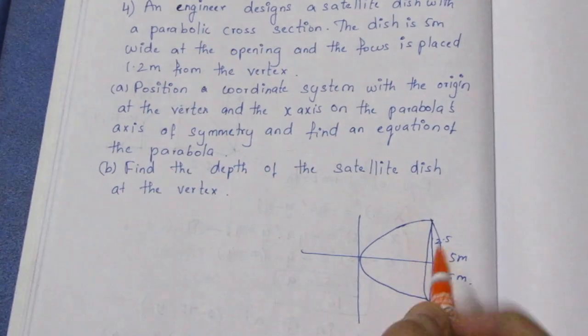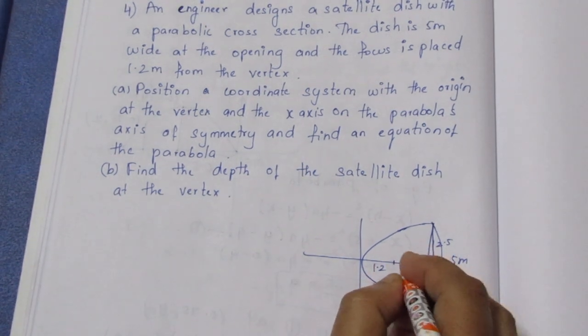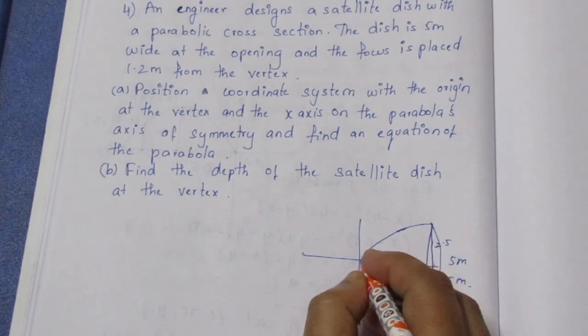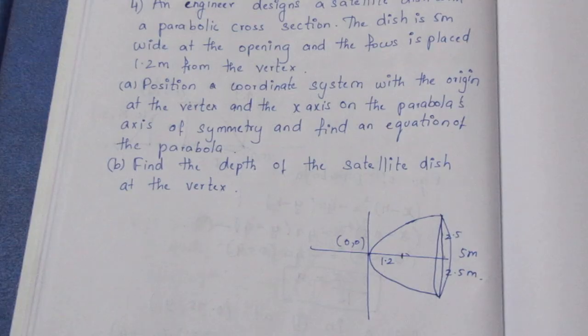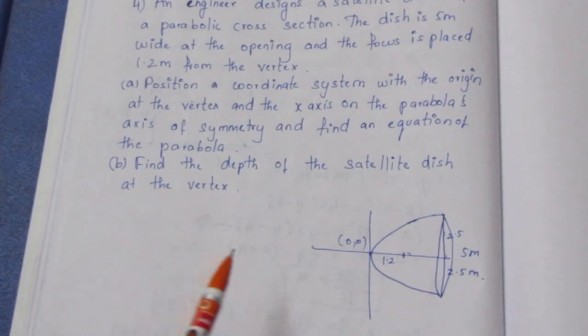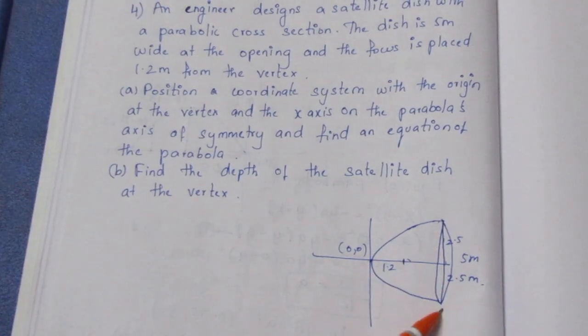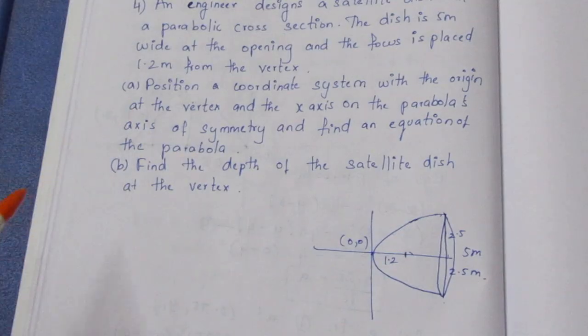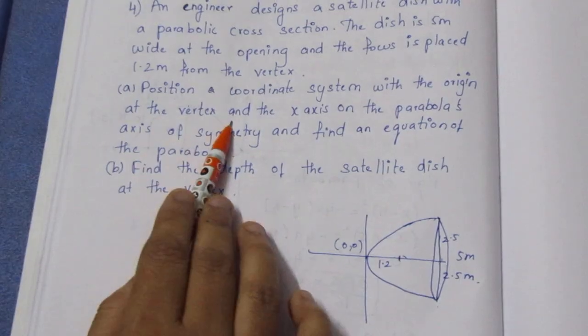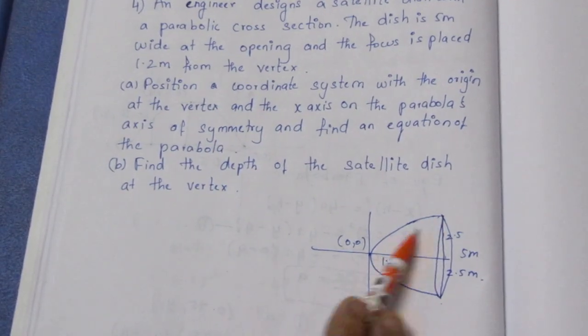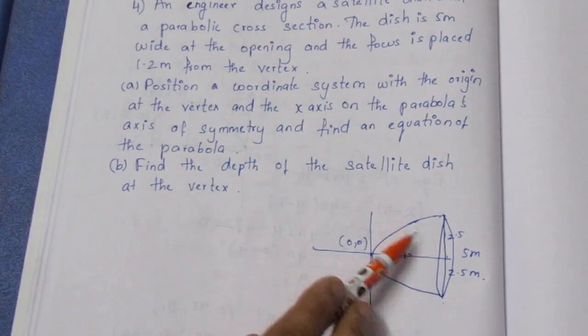The focus is placed 1.2 meter from the vertex. First, position a coordinate system with the origin at the vertex and the x-axis on the parabola's axis of symmetry. So x-axis is the axis of symmetry.